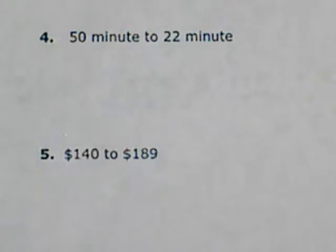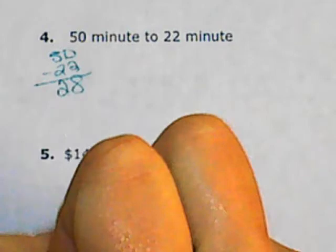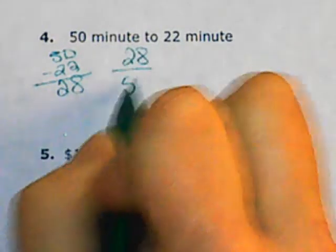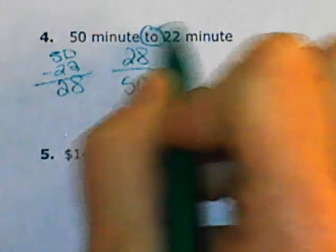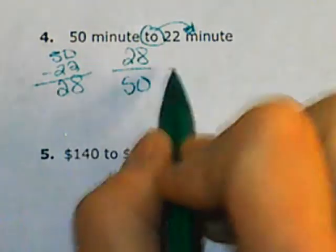Number 4: 50 minutes to 22 minutes. You take the old and the new and subtract the two. So 50 minus 22 equals 28. Put it over the original. Remember, you go to the new. Therefore, 50 is the original.